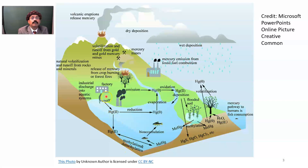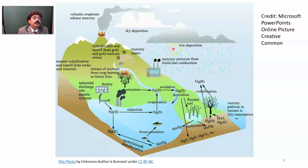There will be methylation and demethylation. Sources of mercury include volcanic eruption, fossil fuel combustion, industrial runoff, and housing runoff. There may be flooded soil that can cause contamination of water and fish, leading to bioaccumulation. Mercury may evaporate and be re-deposited — there may be dry deposition or wet deposition. This image has been taken from Microsoft PowerPoint online pictures, Creative Commons.